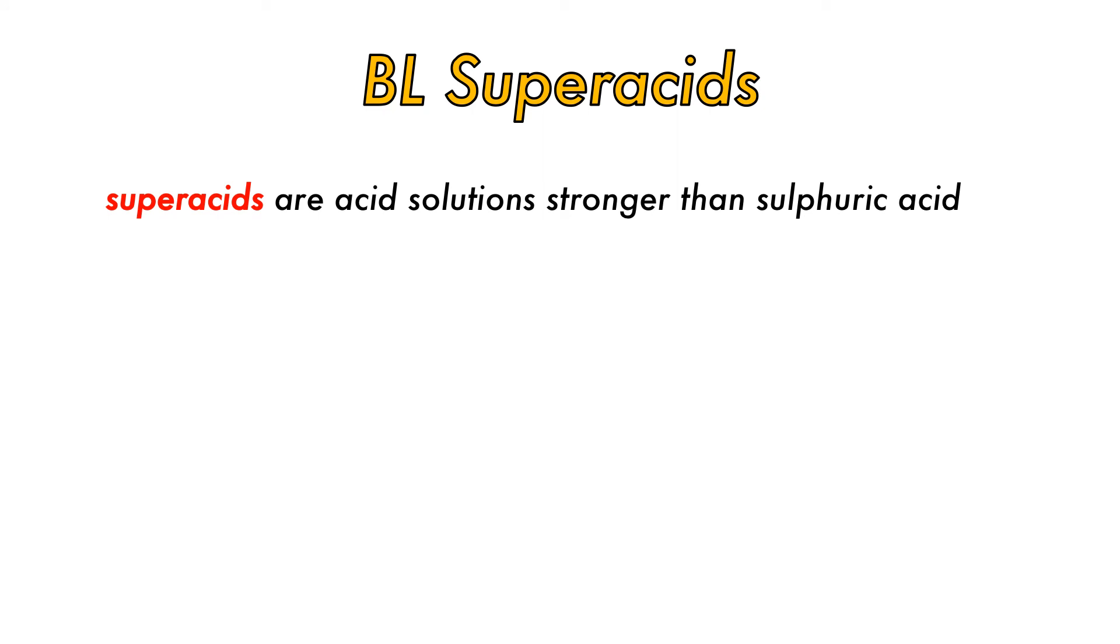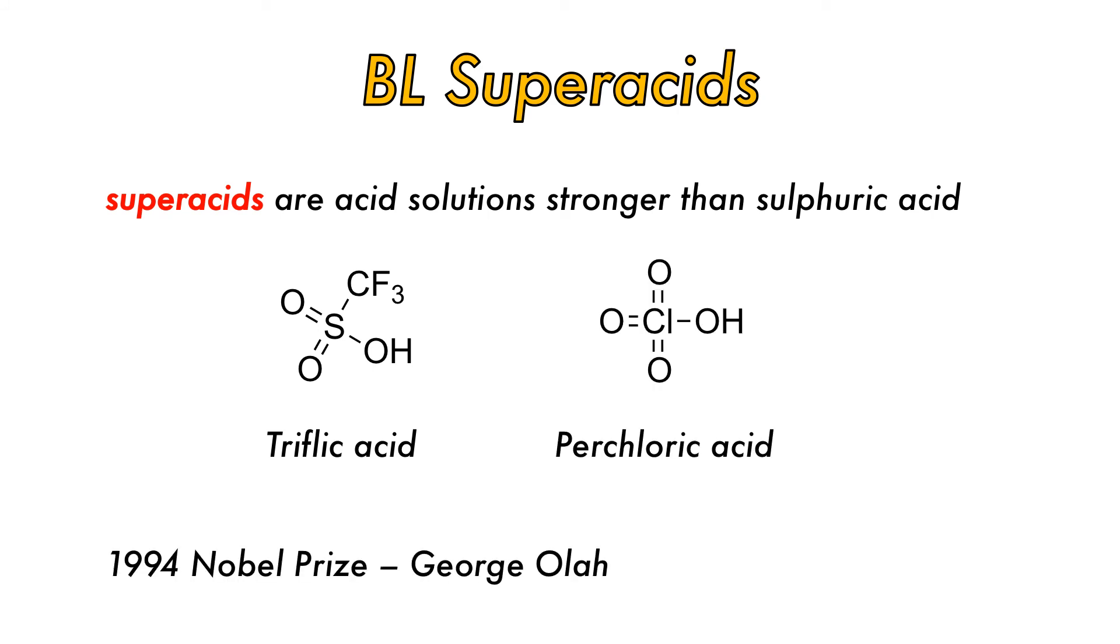Superacids are acid solutions stronger than sulfuric acid. This is a result of the weakness of their conjugate base, which are also typically weak nucleophiles. Some common superacids are triflic acid and perchloric acid. They were deemed so useful in different branches of chemistry, such as in alkylation, that George Olah received the 1994 Nobel Prize in Chemistry for them.